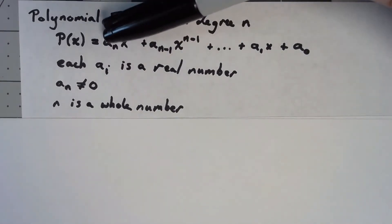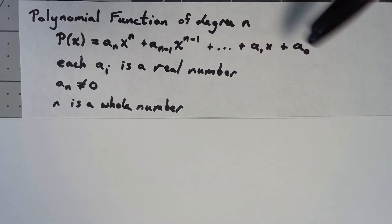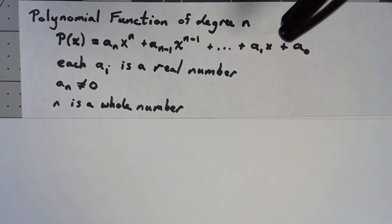We're going to say that each of the coefficients, the numbers in front of the powers of x, have to be real numbers. That can be varied later on but for right now we're going to stick to things where we've got real numbers.